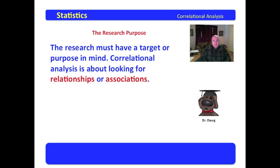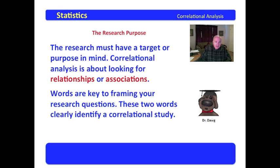The research purpose is the target that the research has in mind. Correlational analysis is about looking for relationships or associations. Meaningful relationships or meaningful associations between variables can be a very neat purpose for a study. Words are key to framing your research questions — the words 'relationship' and 'associations' clearly identify a correlational study. Later on, we're going to look at things like causal comparative research, and when you're comparing, you don't want to use the word 'relationship' or 'association,' because these words denote a correlational study.